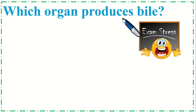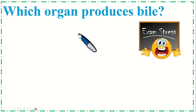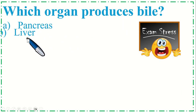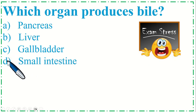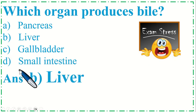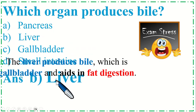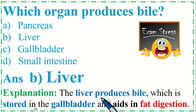Which organ produces bile? Option A: Pancreas, B: Liver, C: Gallbladder, and Option D: Small intestine. The correct option is B, Liver. The liver produces bile, which is stored in the gallbladder and aids in fat digestion.